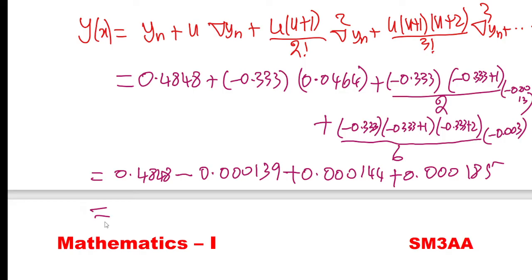So scientific calculator now type: 0.4848 minus 0.000139 plus 0.000144 plus 0.000185.